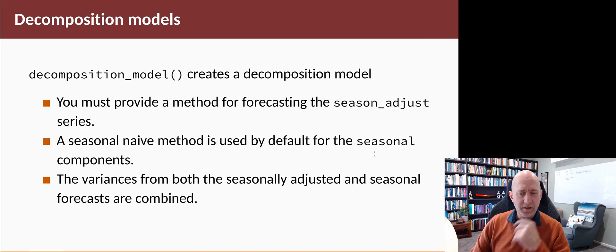Okay, so just to summarize: a decomposition model—the function decomposition_model—creates a model which includes both the decomposition and a model for the seasonally adjusted series and a model for the seasonal component. You have to provide a method for how to forecast the season-adjusted series. There's no default for that.